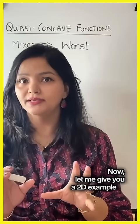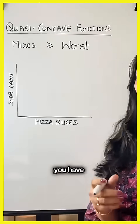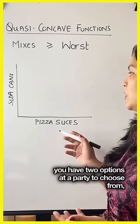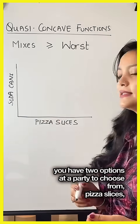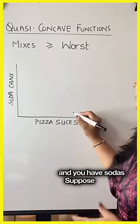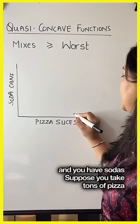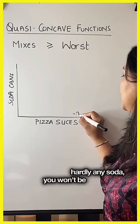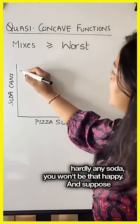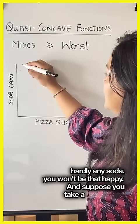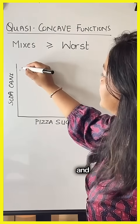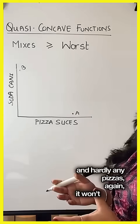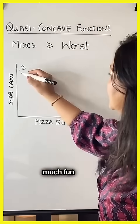Now let me give you a 2D example. You have two options at a party to choose from: pizza slices and sodas. Suppose you take tons of pizza but hardly any soda — you won't be that happy. And suppose you take a lot of sodas and hardly any pizza — again, it won't be that much fun.